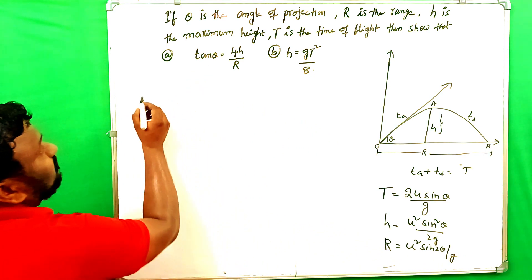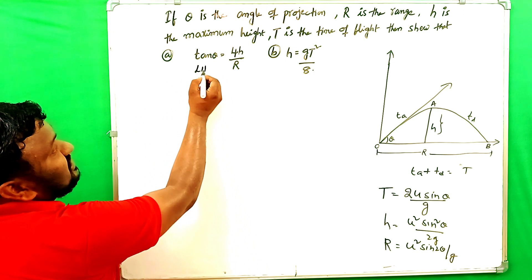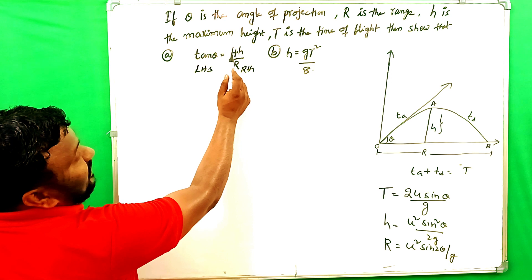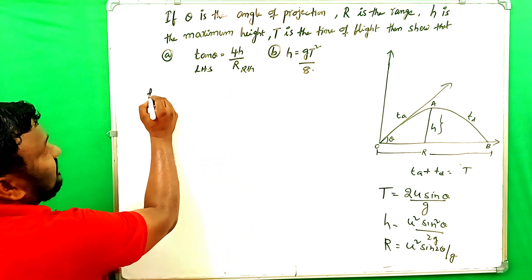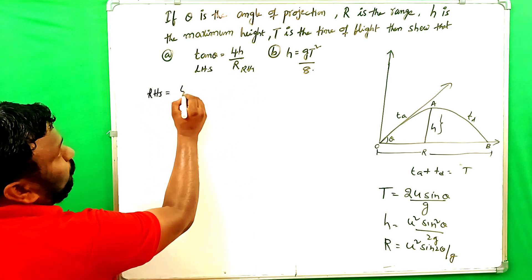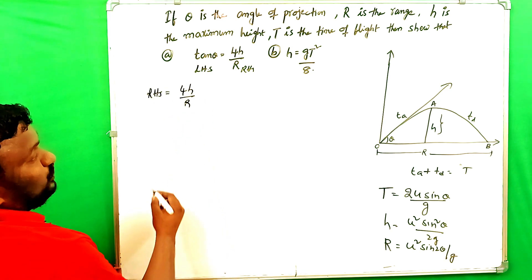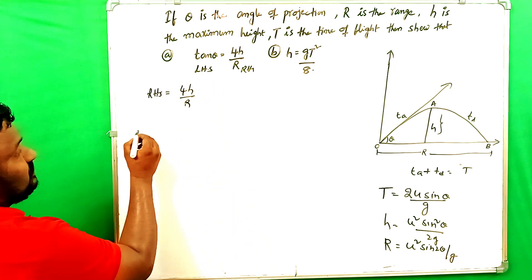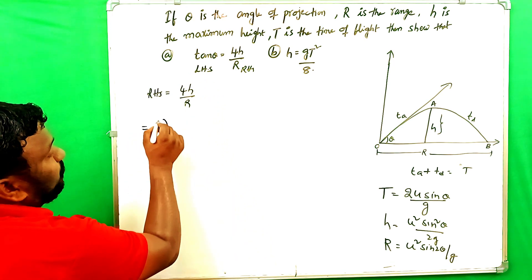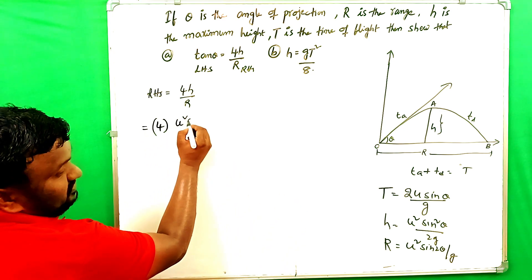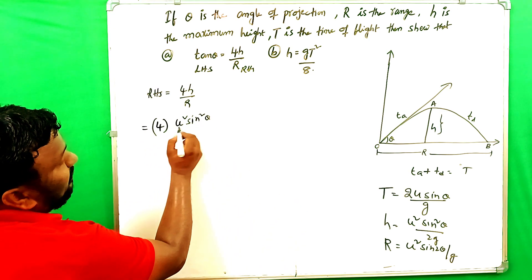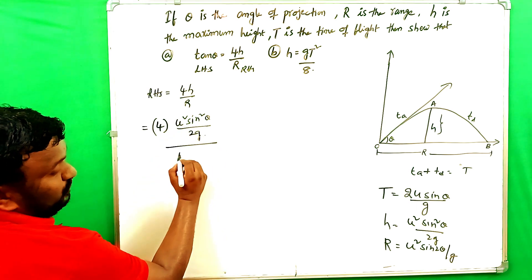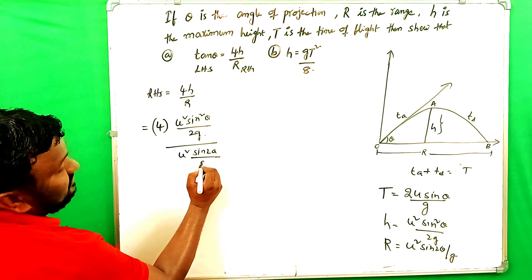First we have to prove this. LHS and this is the RHS. Tan theta is LHS and 4H by R is the RHS. First we have to prove 4H by R. If the h value and the r value substitute, is equal to tan theta. That is equals to 4 into h value, u squared sin squared theta by 2g, divided by u squared sin 2 theta by g.